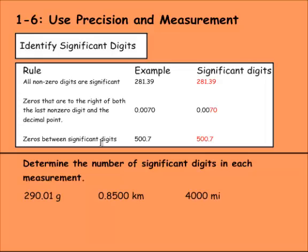Then zeros between significant digits are also significant. So we have a five that's significant. We have a seven that's significant. So these two zeros are significant as well because they lie between the two significant digits.